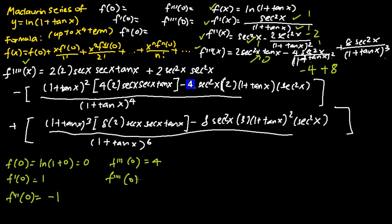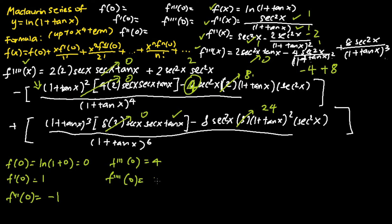For f''''(0), substituting x equals 0 into f''''(x): there are six terms. The first term gives 0, the second gives 2. The third term gives 0, the fourth gives 8. The fifth term gives 0 due to tangent x, and the sixth gives 24. So f''''(0) equals 2 plus 8 minus 24 equals negative 14. Once I have f(0), f'(0), f''(0), f'''(0), and f''''(0), I can substitute into the Maclaurin series formula up to and including x to the power of 4 terms.